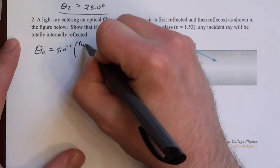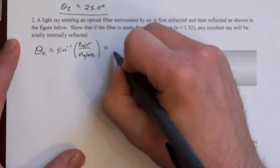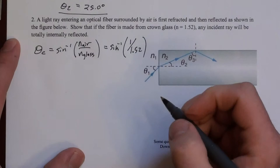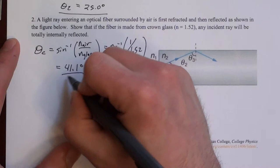And if you plug those numbers in, that's arc sine of 1 over 1.52, which is 41.1 degrees. Okay, so that's the critical angle.